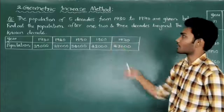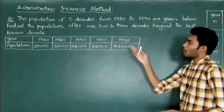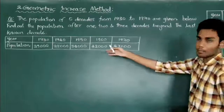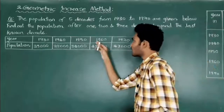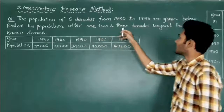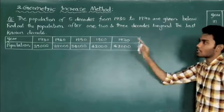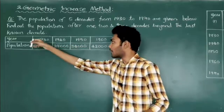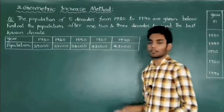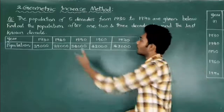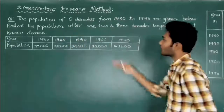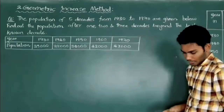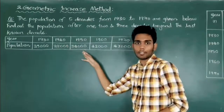The first question: the population of 5 decades from 1930 to 1970 are given in a table. We have to find out the population after 1, 2, and 3 decades beyond the last known decade. Using the last 5 decades of population data, we have to forecast the population after 1, 2, and 3 decades beyond 1970.